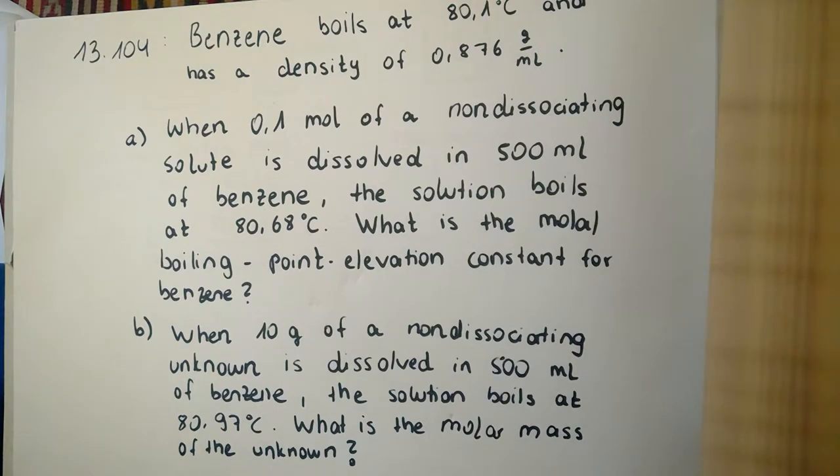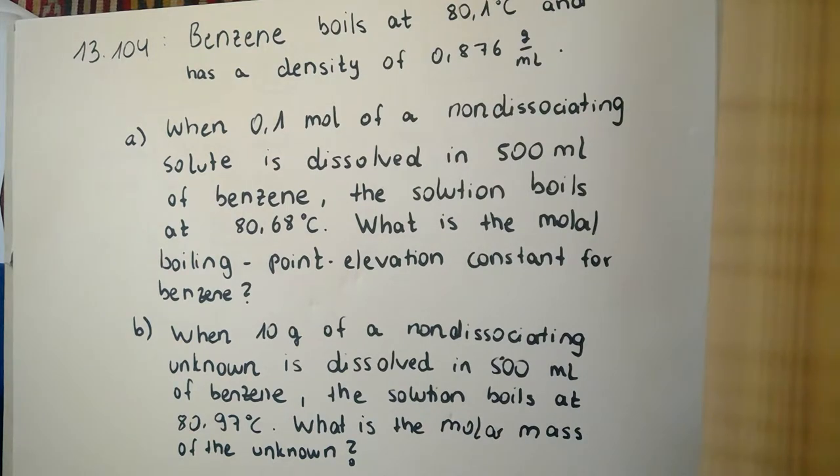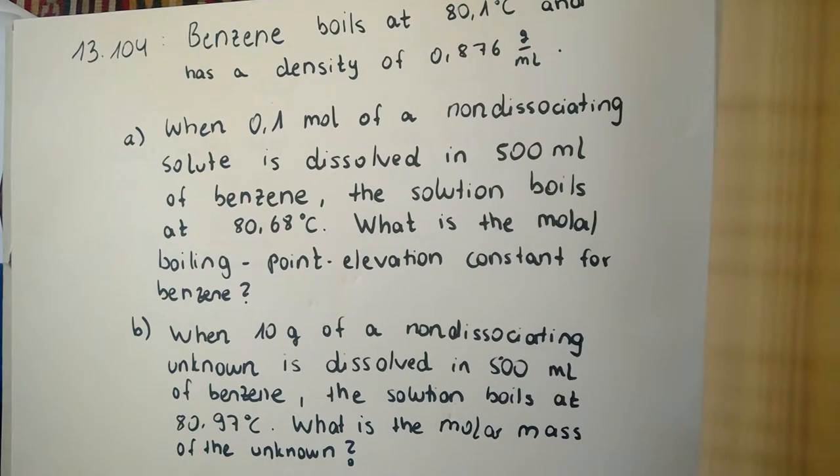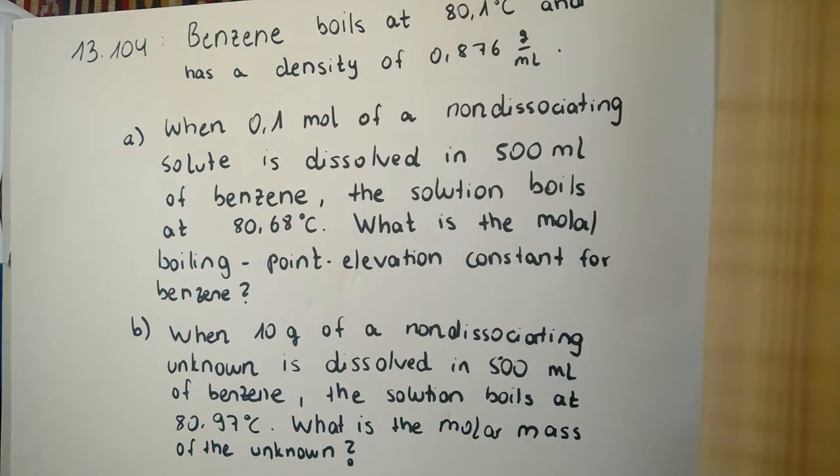In short, it means that the vapor pressure of a solution gets lower in comparison with the vapor pressure of a pure substance. A further consequence is the increasing boiling point that is thematized in our task. The law of Raoult describes this with the following formula: Delta T is the ebullioscopic constant multiplied with the molality of the solution.